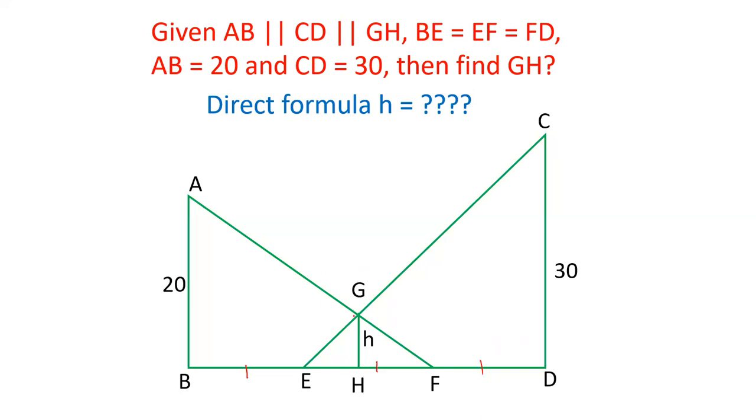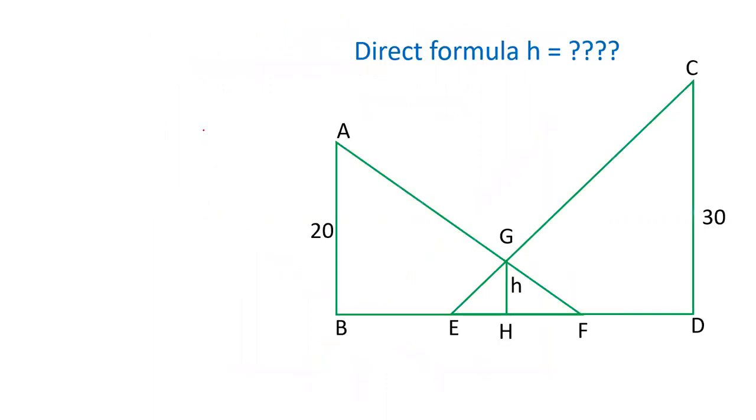Friends, I will tell you about the derivation of this formula, then you can remember the formula for the next question. What is the derivation? First, let's see the triangle AFB. In the triangle AFB, GH is parallel to AB.